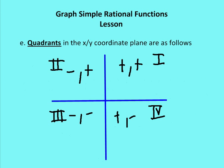Before I move on, I want to talk about quadrants on an xy coordinate plane. There are four quadrants — quad stands for four — and there are four parts to a coordinate plane: upper right, upper left, bottom left, and bottom right. In math, the upper right is the first quadrant, and then we move counterclockwise. The second quadrant is the upper left, the third is bottom left, and the fourth is bottom right. In the first quadrant, both x and y are positive. In the second, x is negative and y is positive. In the third, both x and y are negative. In the fourth, x is positive and y is negative.